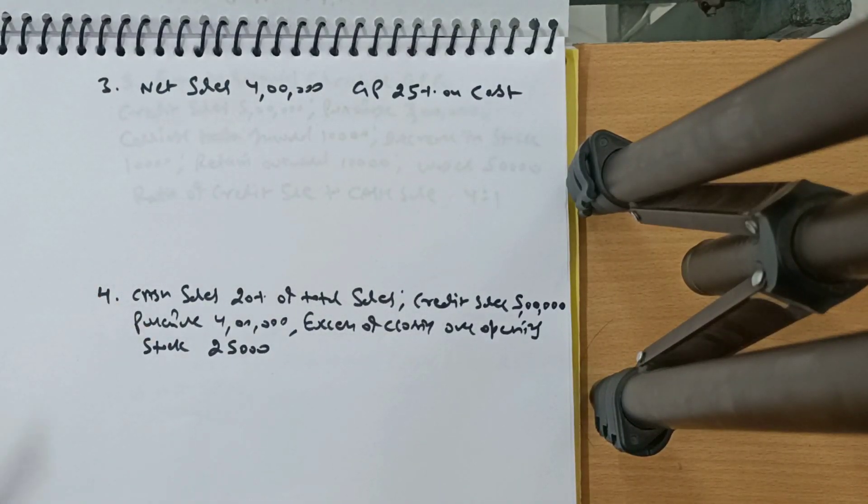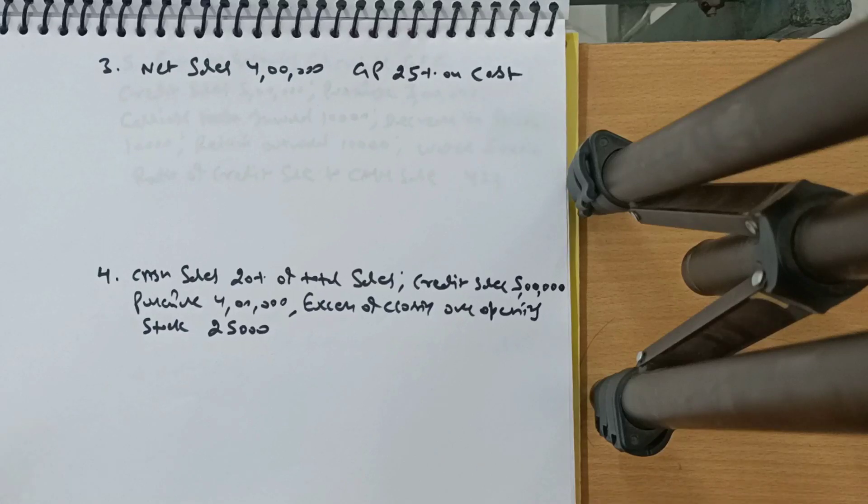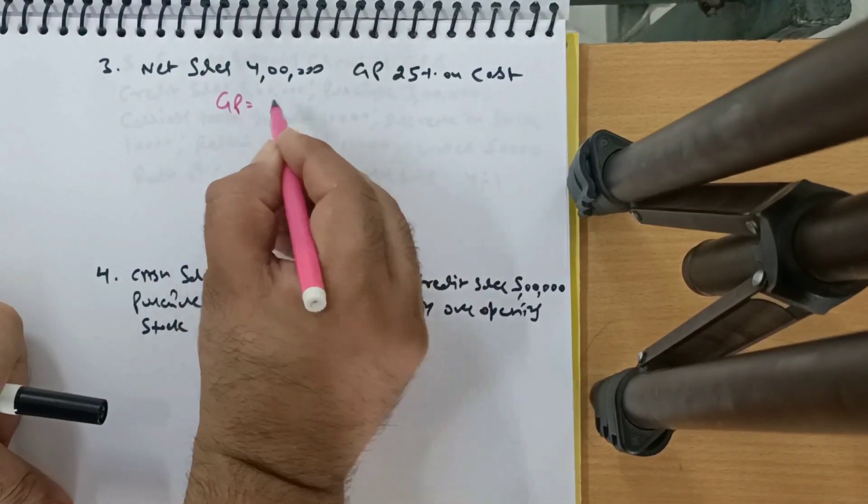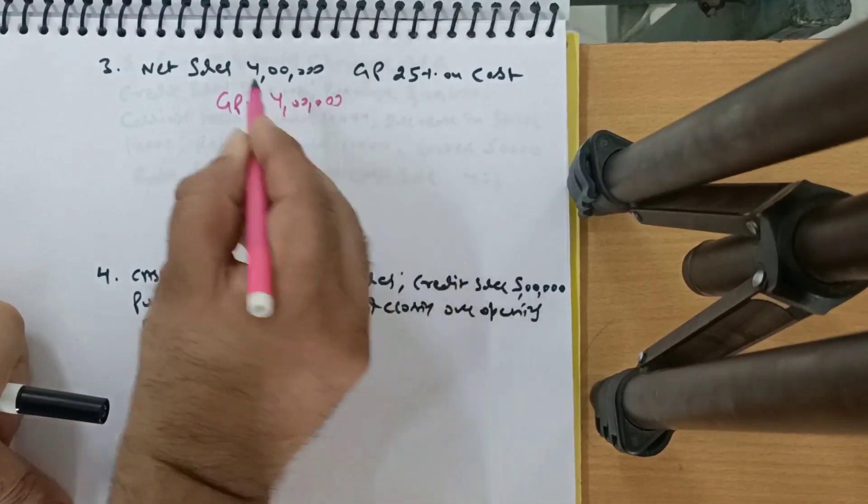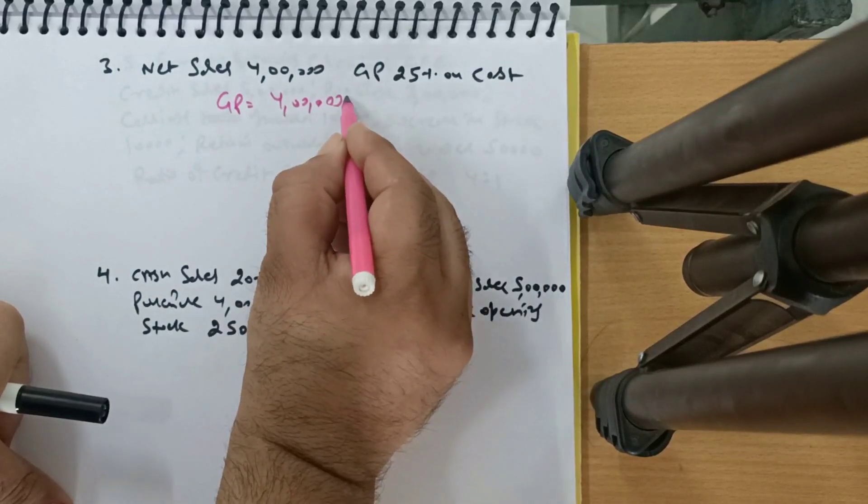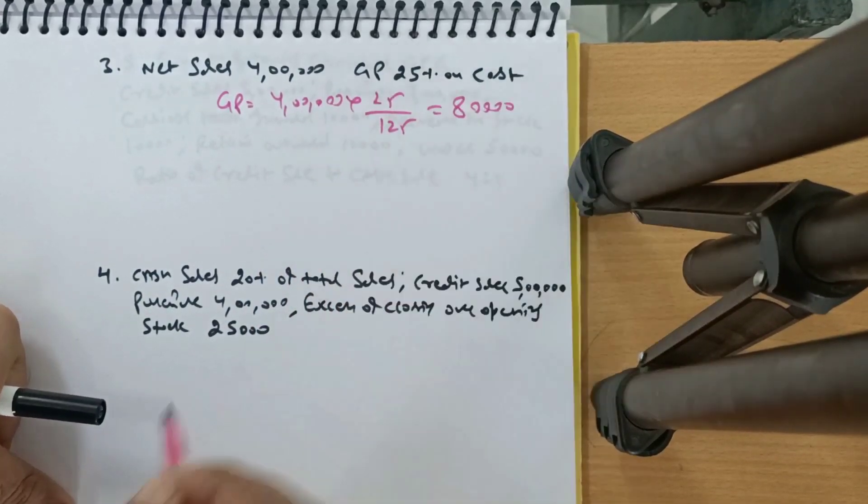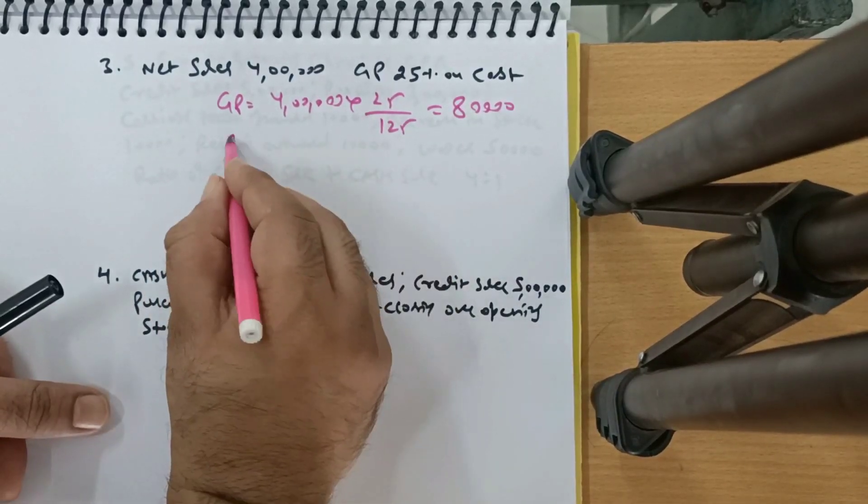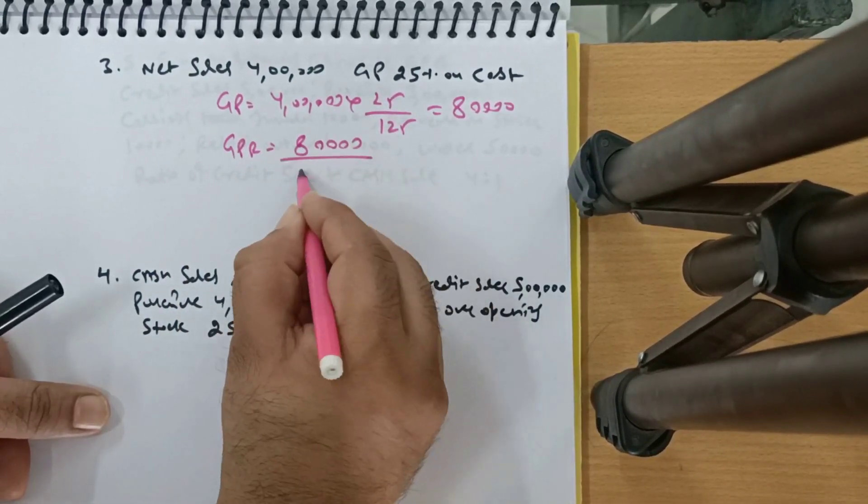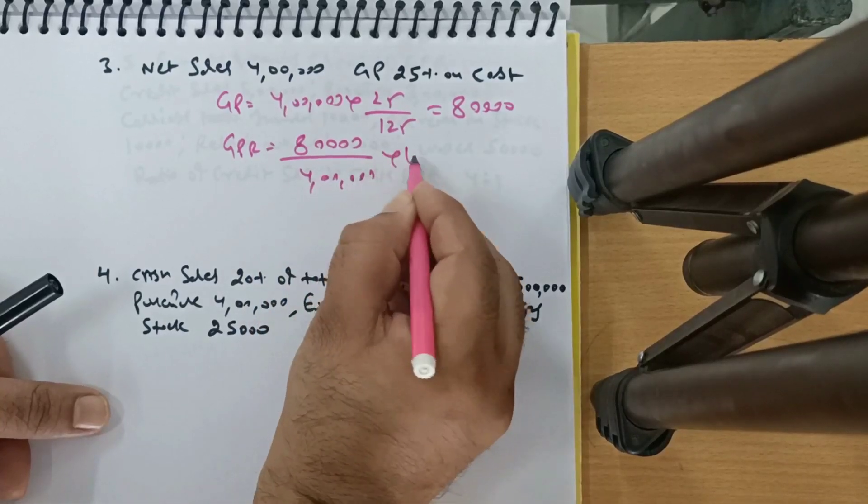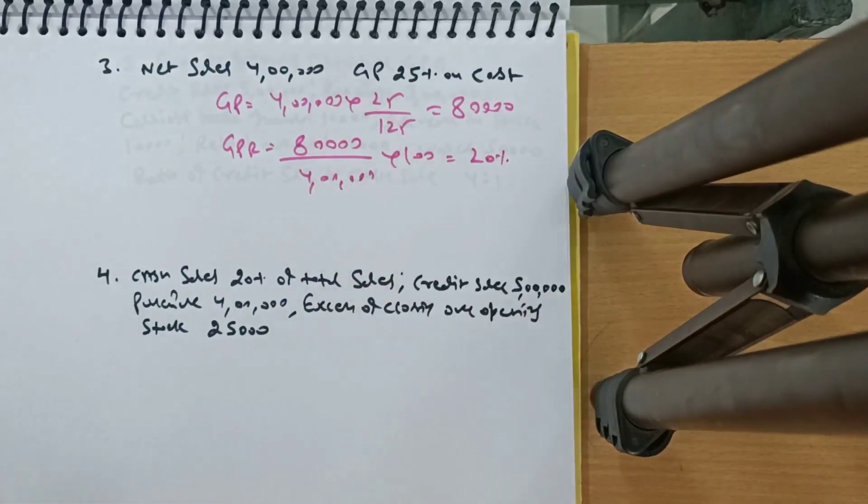Third question. Net Sales given, GP on Cost given. First of all, GP is out of sale, the cost is going to be cost. Sales given, percentage on cost, so add it to that. It will be 80,000. So GPR, GP upon Net Sales into 100, and your answer is 20%.